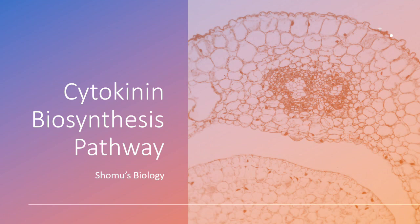Now we will be seeing the biosynthesis pathway of cytokinin. Cytokinin biosynthesis occurs in plant cells, and the cytokinin that plant cells generally produce is known as ZRT. There are two types of processes by which cytokinin biosynthesis takes place.